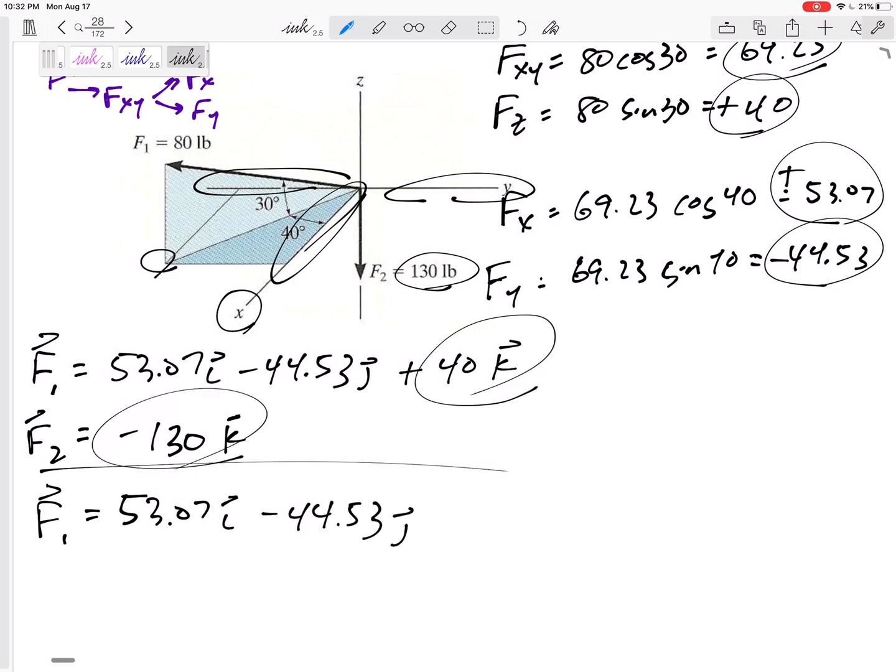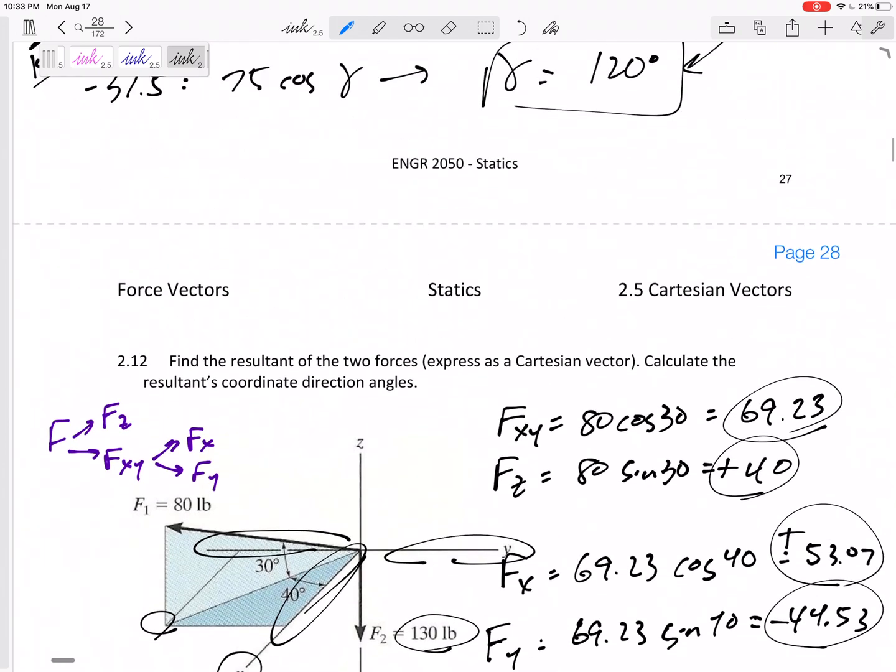44.53 in the j, only add the k's together, now I can add those, negative 90 in the k. That is the answer, box that in to the first step, the first half of this problem. All right, that is the resultant of the two forces expressed as a Cartesian vector.